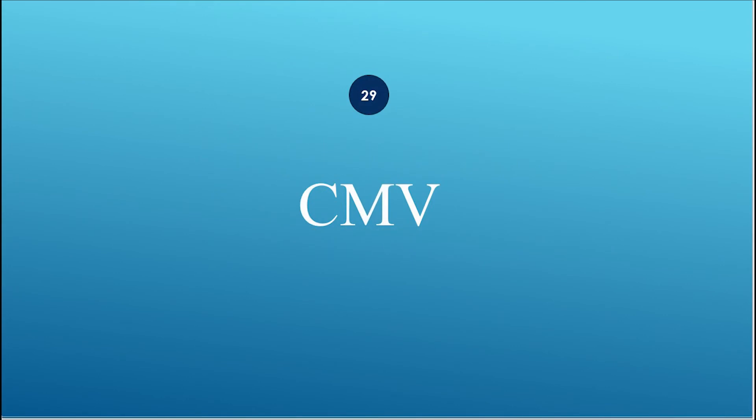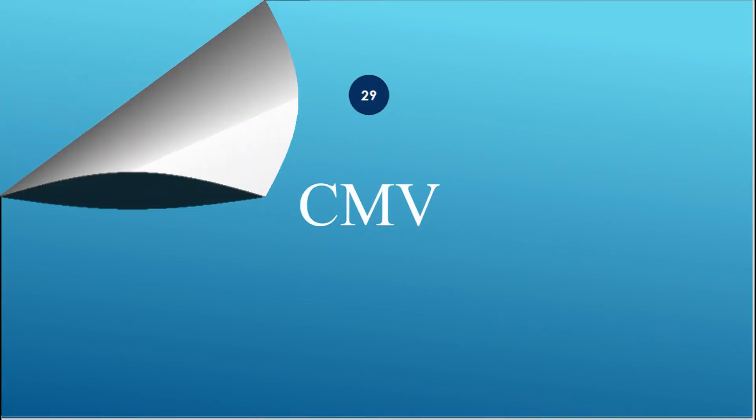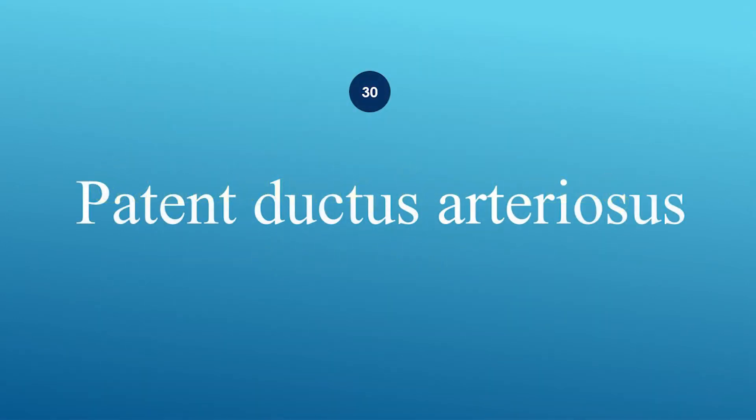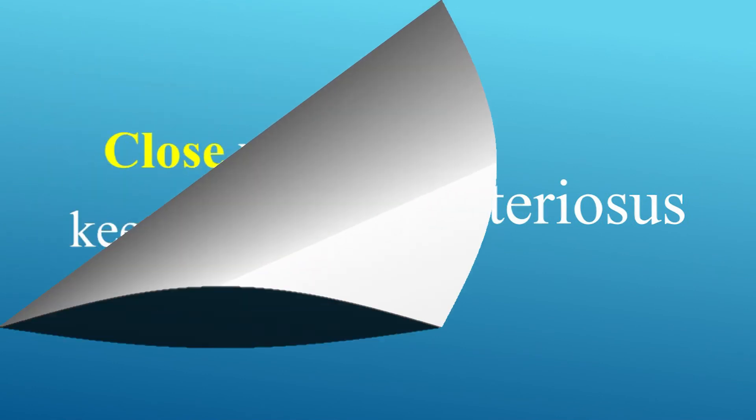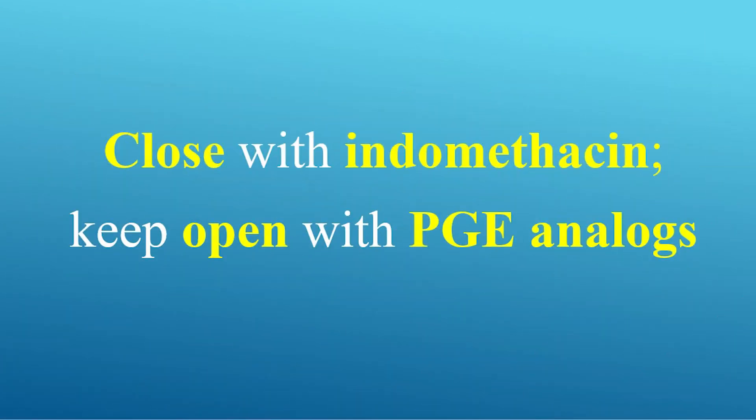How do you treat CMV? Use ganciclovir, foscarnet, or cidofovir. How do you treat patent ductus arteriosus, PDA? PDA can close with indomethacin, and keep open with PGE analogs.